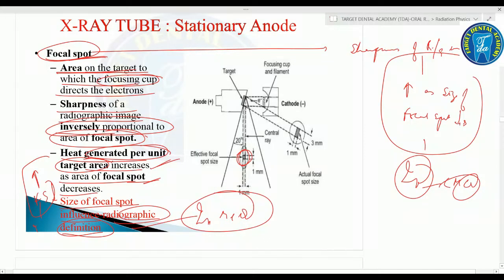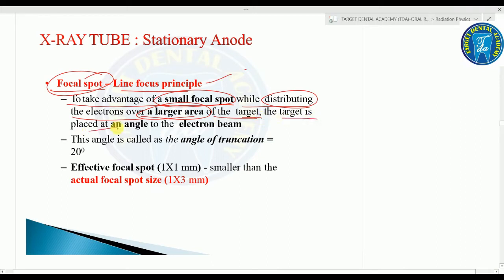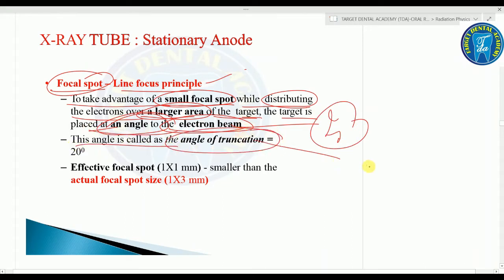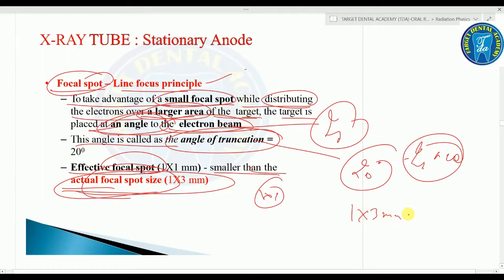If a question asks what the size of the focal spot influences, the answer is radiographic definition. Regarding the line focus principle: the target is placed at an angle to the electron beam — this angle is called the angle of truncation and is 20 degrees. The effective focal spot size is 1×1mm, while the actual focal spot is 1×3mm.